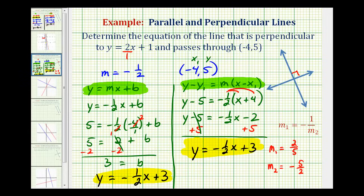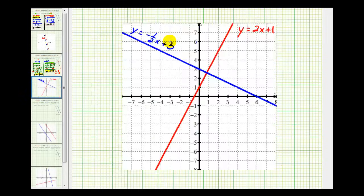Let's quickly verify this graphically. We were given the red line, y equals 2x plus 1. We determined that the equation of the perpendicular line was y equals negative 1 half x plus 3. Notice how these two lines do intersect in a right angle here. And the blue line does contain the given point that had coordinates negative 4, 5.